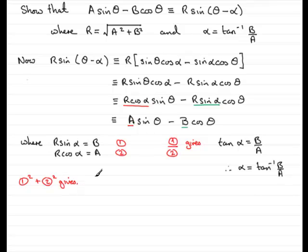Well, what does it give us? Well, if I square number 1, I'm going to get R squared sine squared alpha, okay, is equal to B squared.